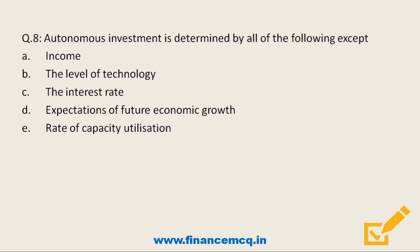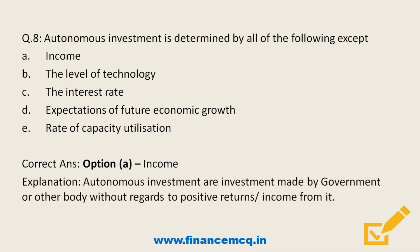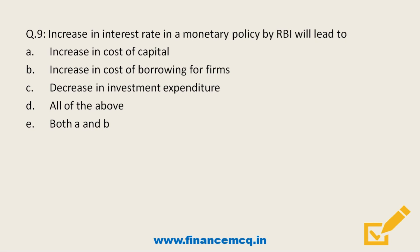Next question: Autonomous investment is determined by all of the following except — Option A: Income, Option B: Level of technology, Option C: Interest rate, Option D: Expectations of future economic growth, Option E: Rate of capacity utilization. The correct answer is Option A — income. Autonomous investments are investments made by the government or other bodies without regard to positive returns or income.